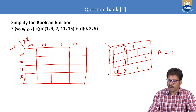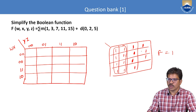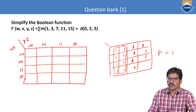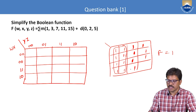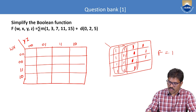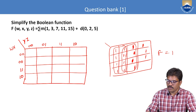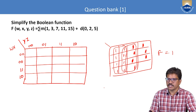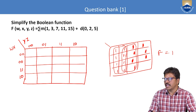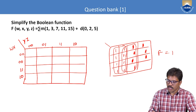Once covering those 8 ones, we focus on the remaining ones. For the remaining ones, we check: is there any possibility of 16? No. Is there any possibility of 8? Yes — if we take them horizontally, we can cover 8 ones. Then for the next remaining one, we again check from the highest priority: 16? No. 8? Yes. We create another group of 8 ones to cover it.